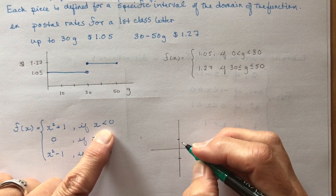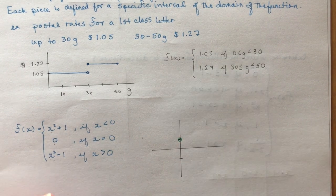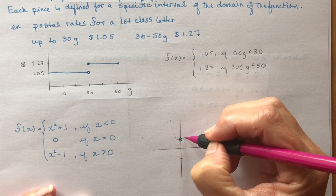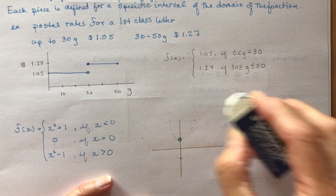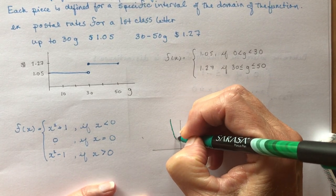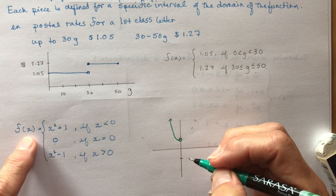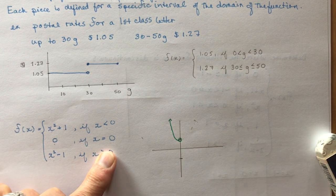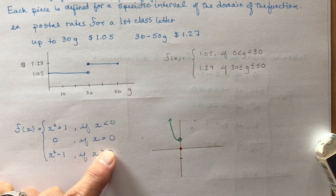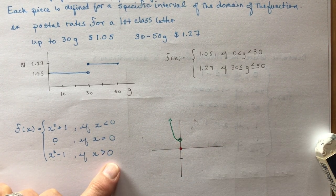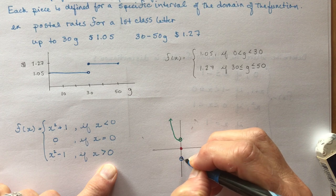For x² + 1 where x is less than zero, there's an open circle at x = 0 because it doesn't include zero. So the parabola starts there and goes to the left. Then the function equals zero when x = 0, so we place a single dot at the origin. Finally, for x² − 1 when x is greater than zero, we have an open circle at x = 0 and the parabola goes to the right.